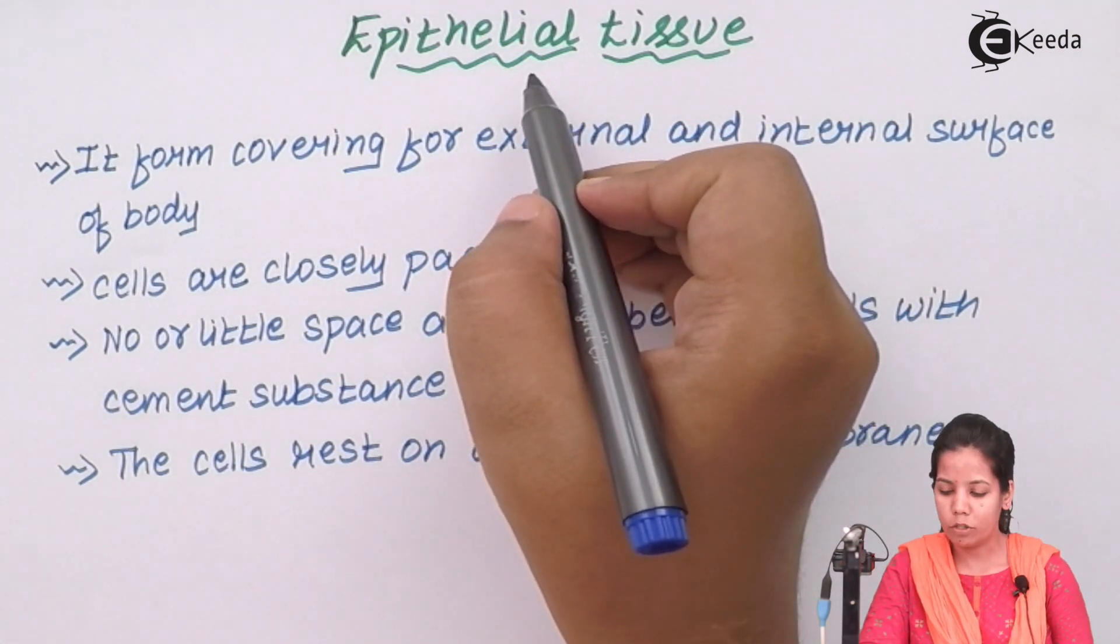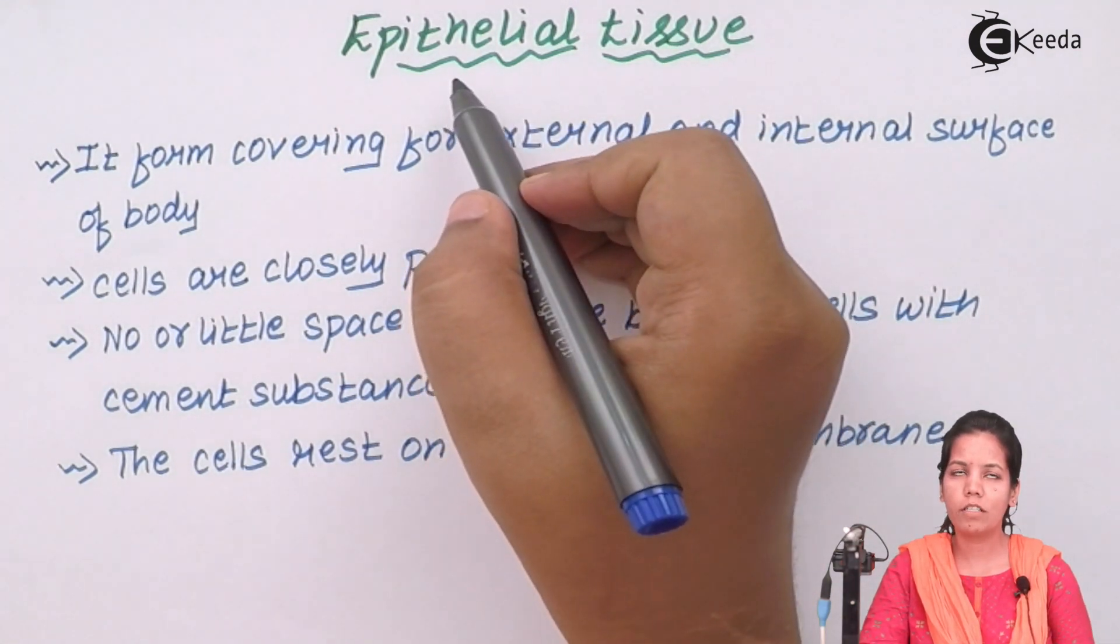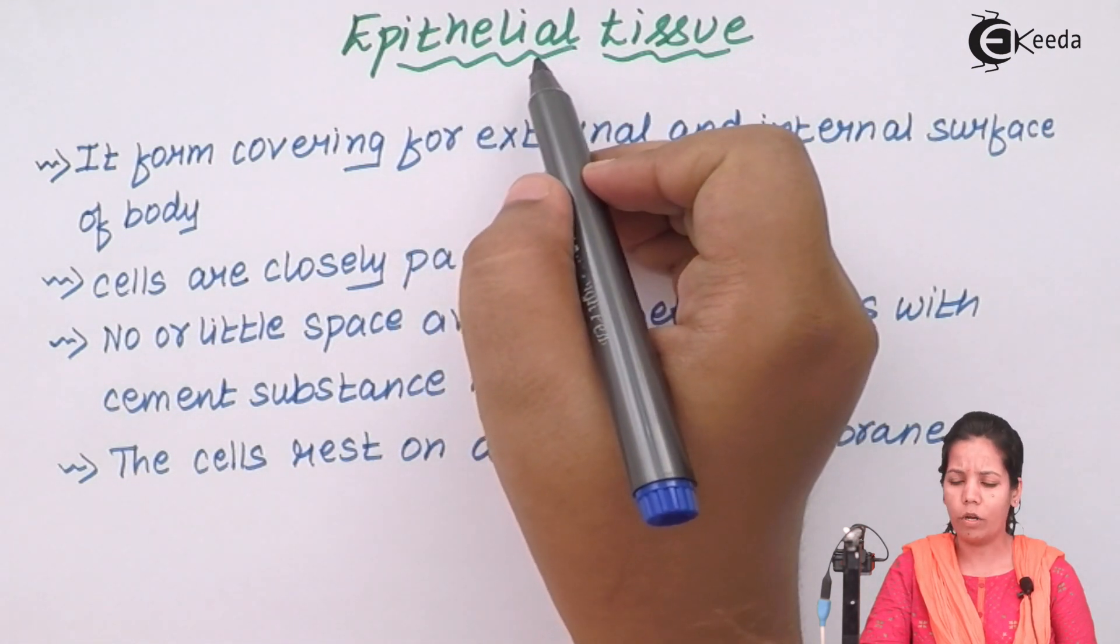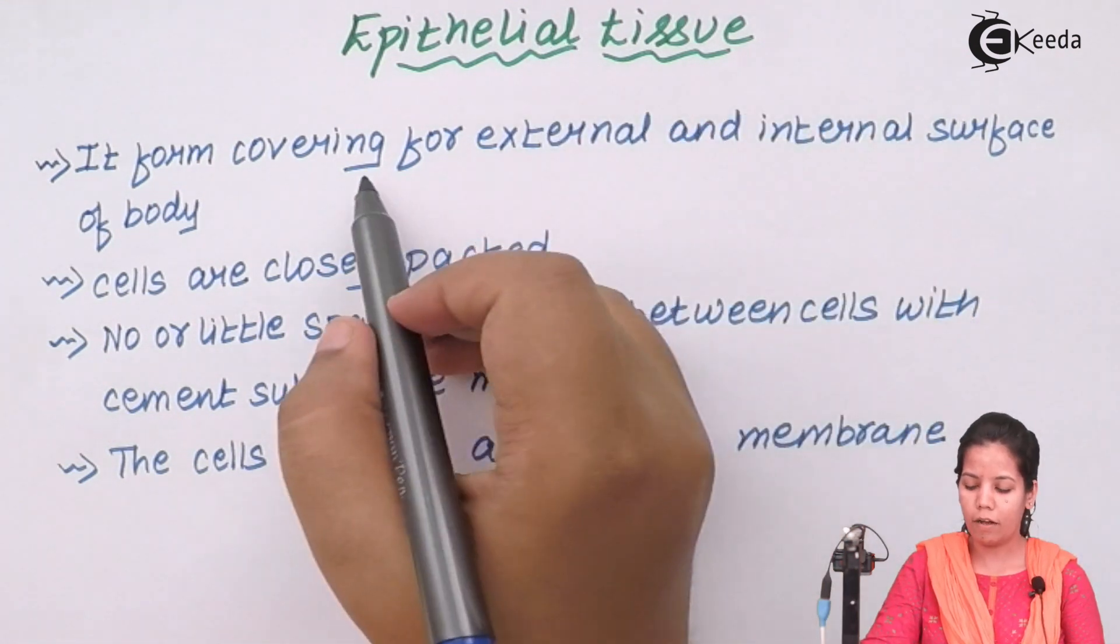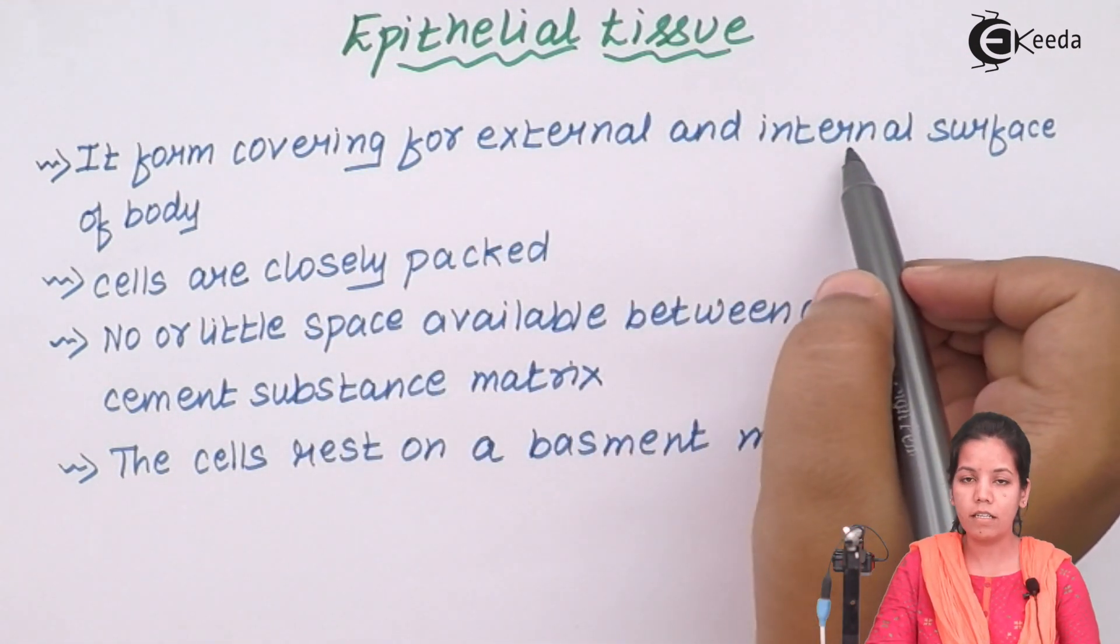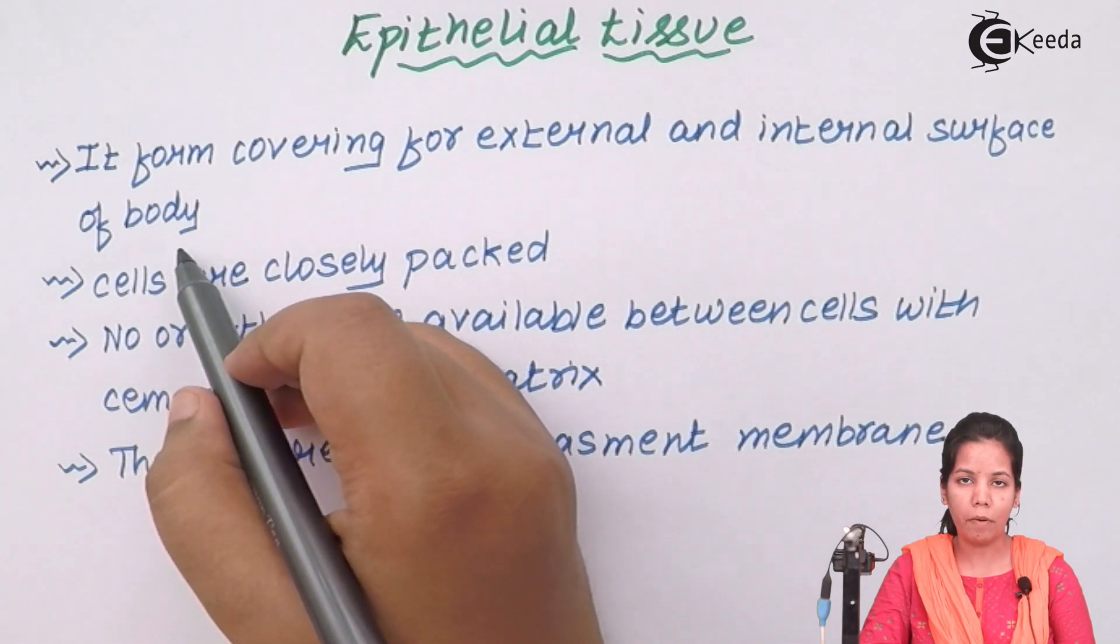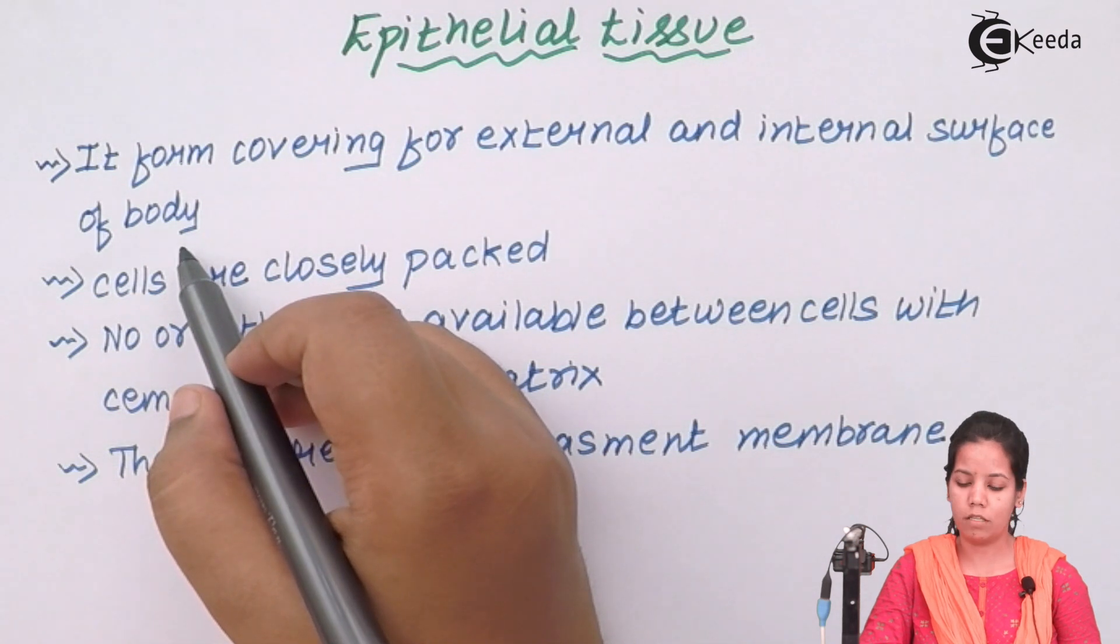To recap: epithelial tissue is the tissue present on your skin. Epi means above and thelial means it's growing above. It forms the covering for external as well as internal surfaces of your body, including your stomach and ribcage. Different kinds of epithelial tissue are present on their surfaces.